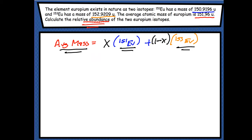Alright, so now we're just going to plug in the numbers. So, average mass is 151.96 equals x.